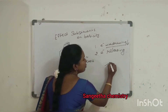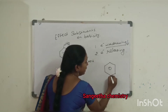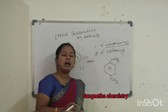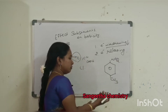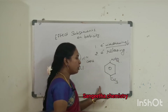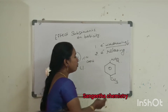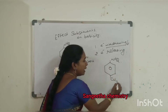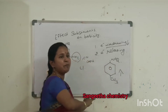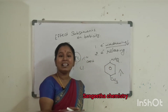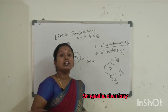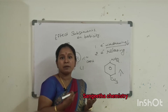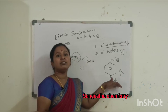For example, electron releasing group is CH3, and the compound with NH2 is para-toluidine. The CH3 group is an electron releasing group. When you add an electron releasing group, the amine will be more basic than aromatic amines.